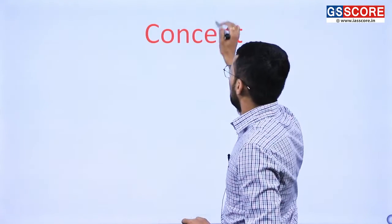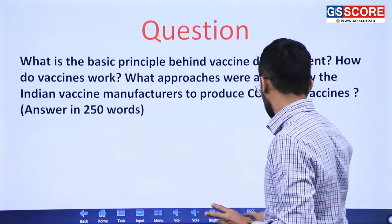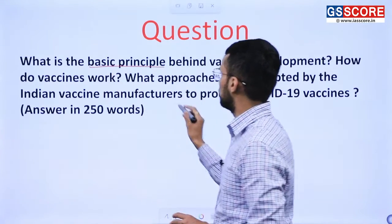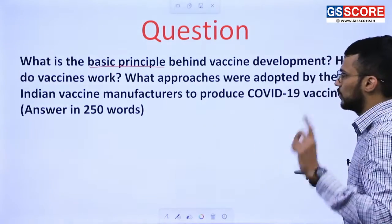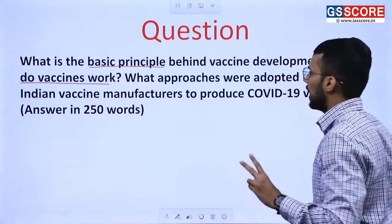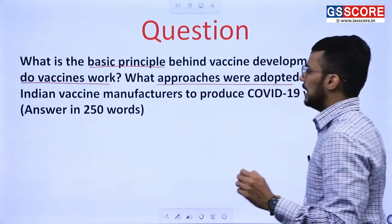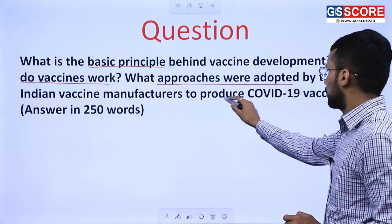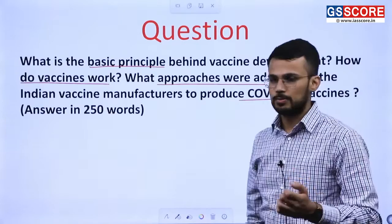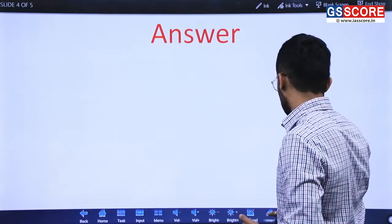The question has three important parts. First, we are supposed to address the basic principle behind vaccine development. Second, we are supposed to talk about how vaccines work. Third, what approaches were adopted by Indian vaccine manufacturers to produce COVID-19 vaccines. These are the three parts of this question, and let us discuss the answer.